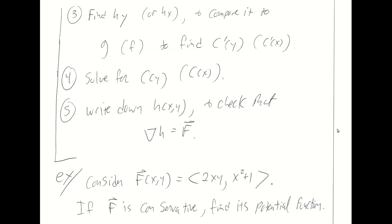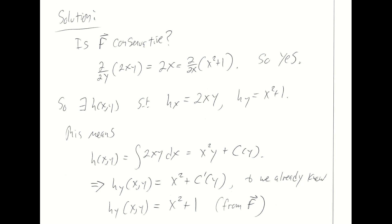Let's do one more example. Here is a vector field — if it is conservative, find its potential function. It's worth noting that if it's not conservative, there's nothing to do, and you definitely want to check first because it's going to be time consuming if you get embroiled in the process of attempting to find a potential function where one does not exist. For this vector field, is F hat conservative? Yes, it turns out to be. I take the first component function and take its partial with respect to y and get 2x. The second component function's partial with respect to x also gives 2x. Since those are equal, we're dealing with a conservative vector field.